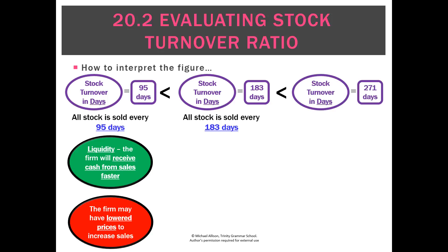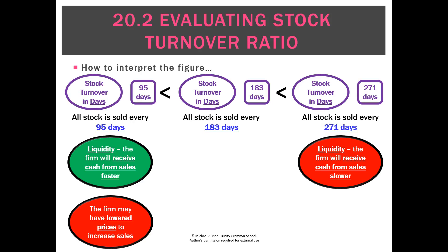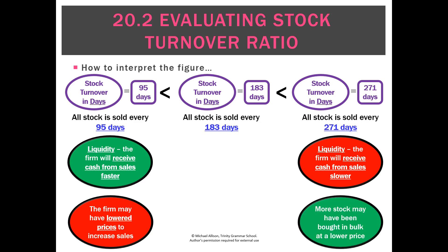Again the negative might be we had to lower prices to do it and we're not actually making a profit on those sales. If the trend went the other way and it went up from 183 days to 271, we'd say on its face value that's a negative result — on average we are taking much longer to sell out all of our stock. But again maybe we just increased the amount of stock we had by buying in bulk at a lower price and we just haven't sold it yet, so we could argue that that's a positive.